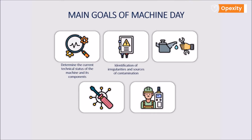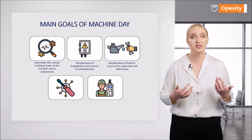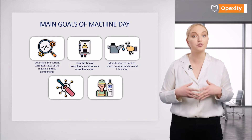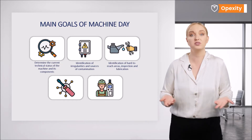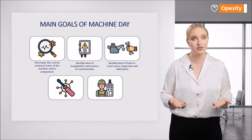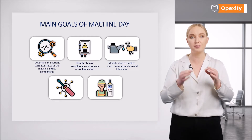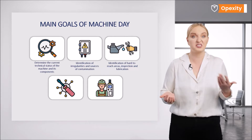The next goal is to identify hard-to-reach areas and perform basic lubrication of machine components that require it, so we use the cleaning time for these activities as well. Hard-to-reach areas are, firstly, those areas of the machine that are difficult to clean, and secondly, those areas where it is difficult to read basic machine parameters, such as pressure or fluid levels.